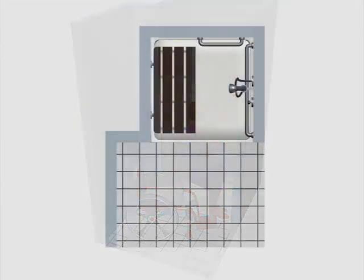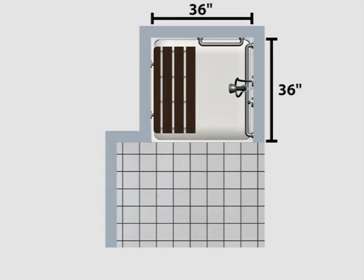Transfer shower stalls must be 3 feet wide and 3 feet deep, measured to the center points of the wall. These are absolute, not minimum dimensions.